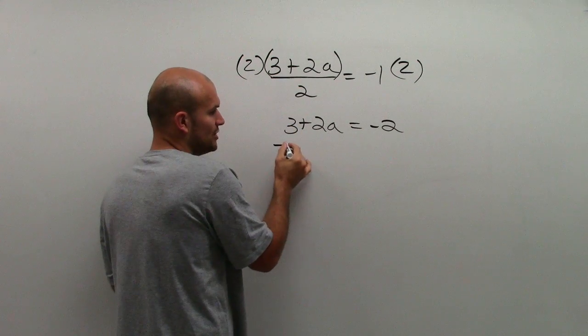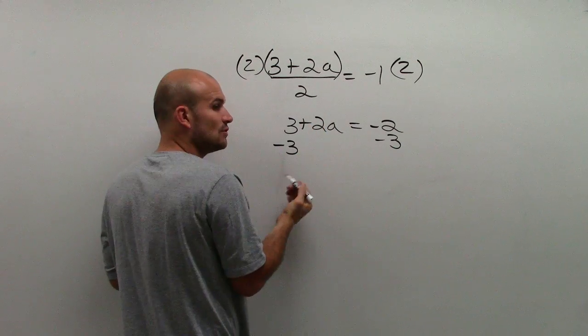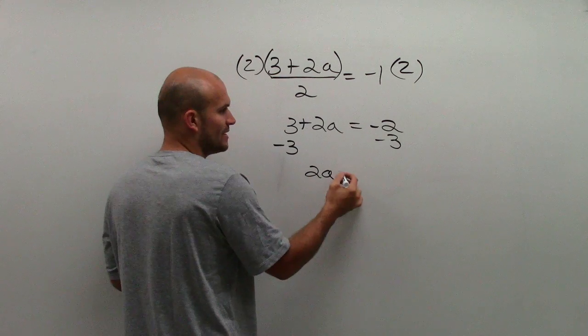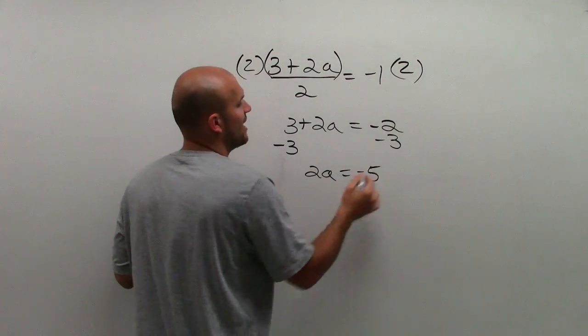So now to undo adding 3, I'm going to subtract the 3. So I subtract the 3. That goes to 0, so I get 2a equals negative 2 minus 3, which would be negative 5.